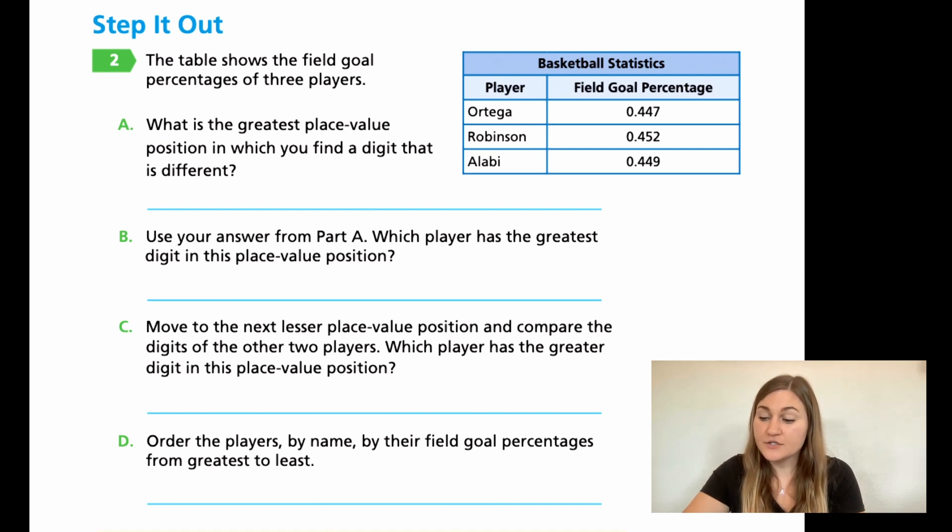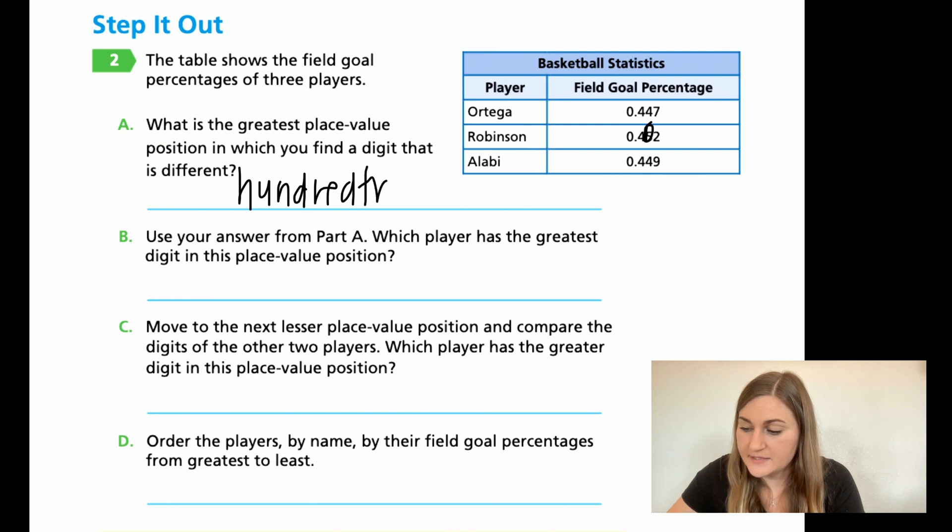Let's go ahead and go over these problems. So for A, we want to find out what place value is that first change. So all the zeros, that's in the ones place, right? They're all zeros. Then look at the tenths place. All three have a four. Then go in the hundredths place value. We have a four, then a five, and then another four. So this five is the one that makes the difference. So in what position or what place value did we find that first change? It is going to be in the hundredths place value. Then using your answer from part A, which player has the greatest digit in this place value position? Well, the five, that five change, belonged to which player? That belonged to Robinson. So we're just going to write his name.